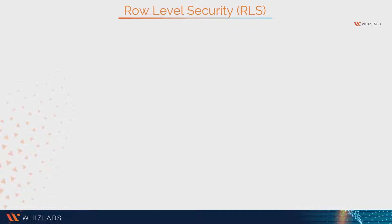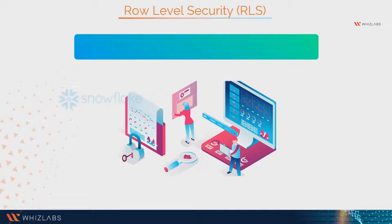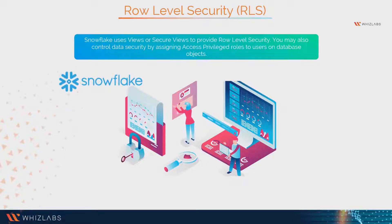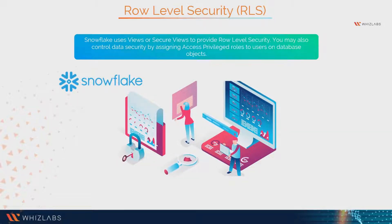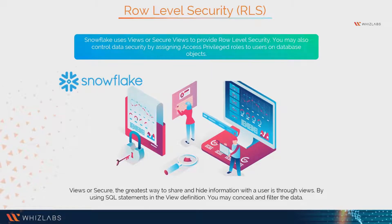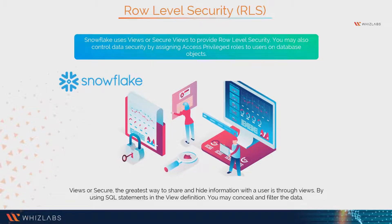Now that you're familiar with data encryption, let us move ahead and understand row level security, that is RLS. Snowflake uses views or secure views to provide row level security. You may also control data security by assigning access privilege roles to users on database objects. Views or secure views are the greatest way to share and hide info with a user.